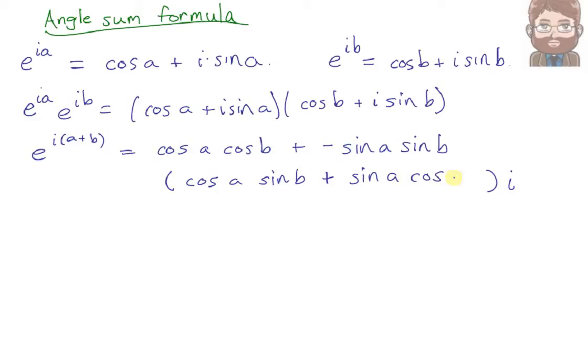Next, I'm going to take Euler's formula and apply it directly to e to the i times a plus b. In that case, we get cosine of the quantity a plus b plus i times sine of the quantity a plus b.